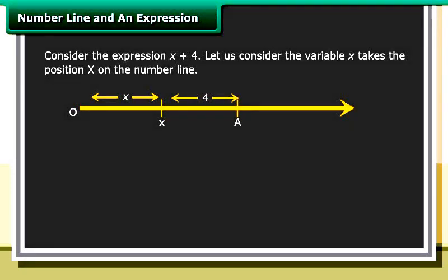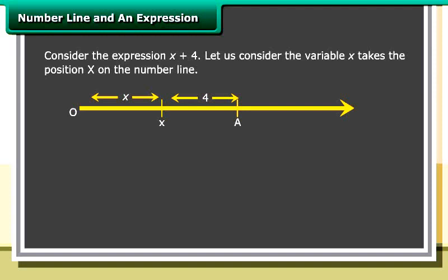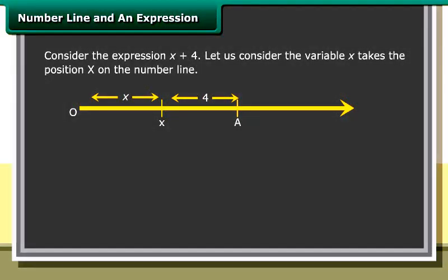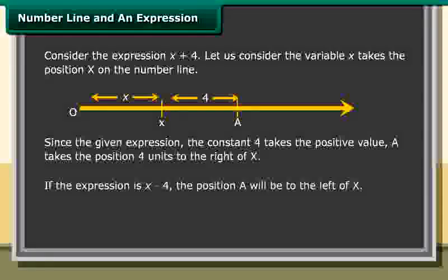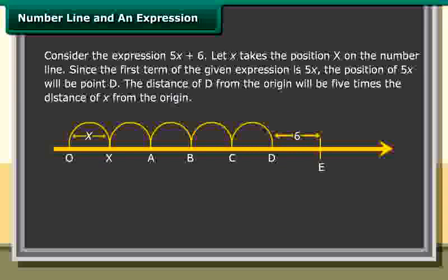Number line and an expression: Consider the expression x plus 4. Let the variable x take position x on the number line. Since the constant 4 takes a positive value, it takes the position 4 units to the right of x. If the expression is x minus 4, the position will be to the left of x. For the expression 5x plus 6, the position of 5x will be point d, and the distance of d from the origin will be 5 times the distance of x from the origin.